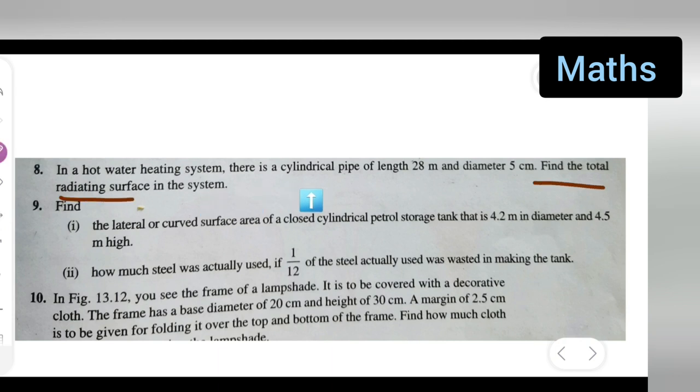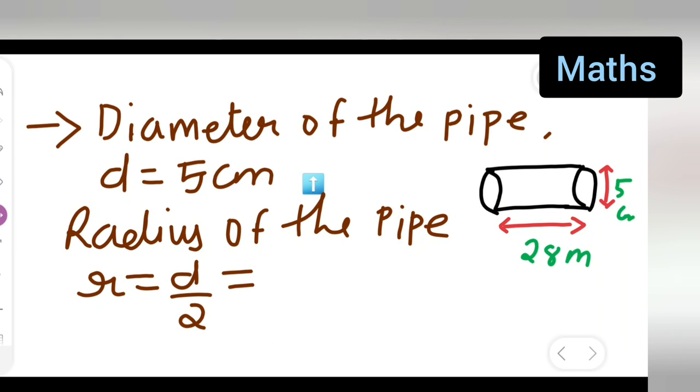We need to find the total radiating surface of the system. The diameter is given to be 5 centimeter. Let me write down, diameter of the pipe is 5 centimeter.